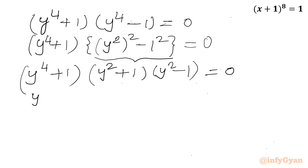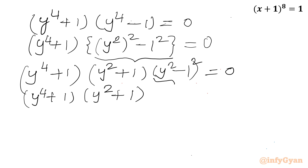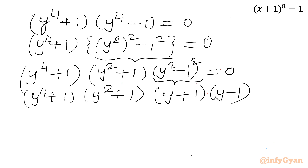So we can write (y^4 + 1)(y² + 1), and here we apply the difference of squares identity once again to y² - 1, giving (y + 1)(y - 1). So the full factored form is (y^4 + 1)(y² + 1)(y + 1)(y - 1) = 0.